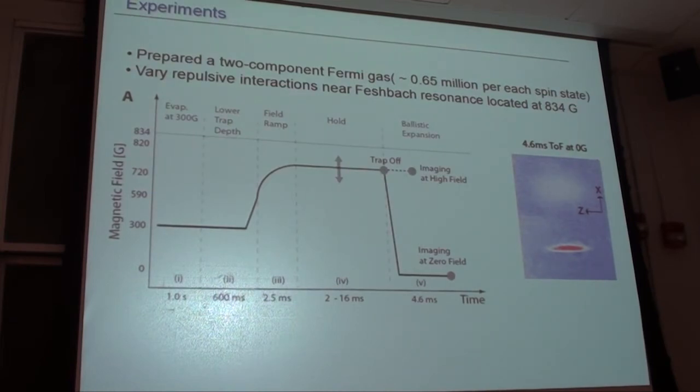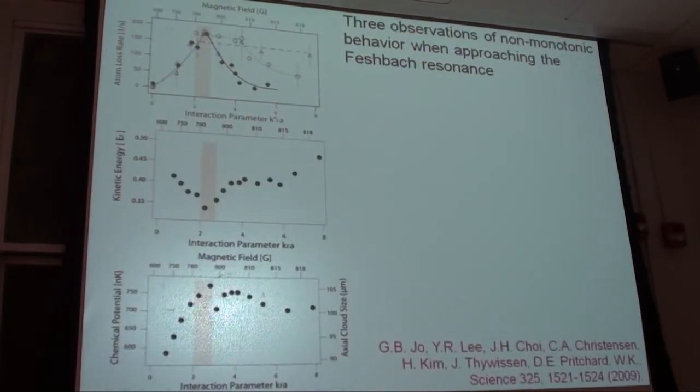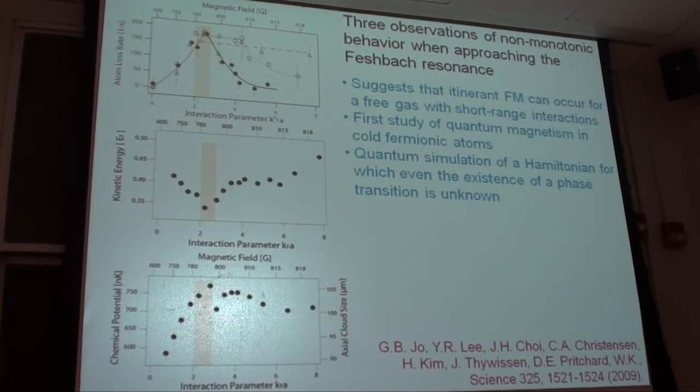What we did in our first experiment in 2009 is we rapidly took the system close to Feshbach resonance, and then we looked at the cloud. We looked at the kinetic energy in time of flight, we looked at the size of the cloud, we looked at losses. We found that the loss rate suddenly changed, the kinetic energy had a kink, the chemical potential had a kink, and all that agreed with simple solutions of this Hamiltonian using mean field theory. So we concluded in this paper that it seems there is some evidence that the ferromagnetic phase transition has been observed.